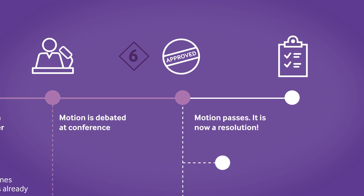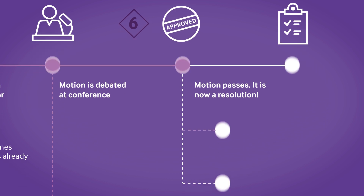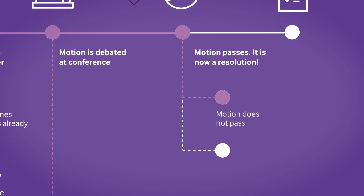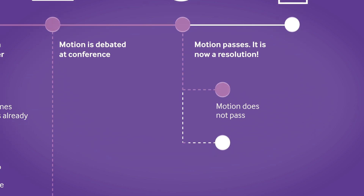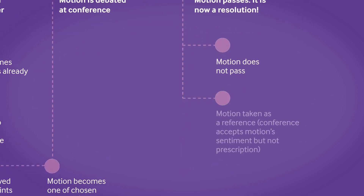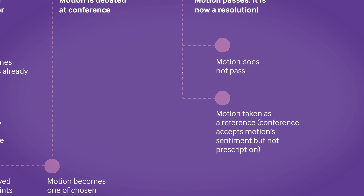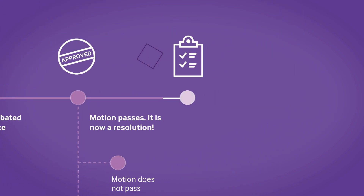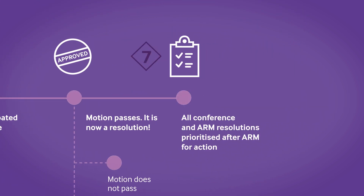There are three possible outcomes for any motion debated and voted on. Number one: the motion is carried and therefore becomes junior doctors committee policy. Number two: the motion does not pass. Number three: the motion is taken as a reference, meaning the conference accepts the sentiment behind the motion but doesn't endorse the particular action the motion calls for.